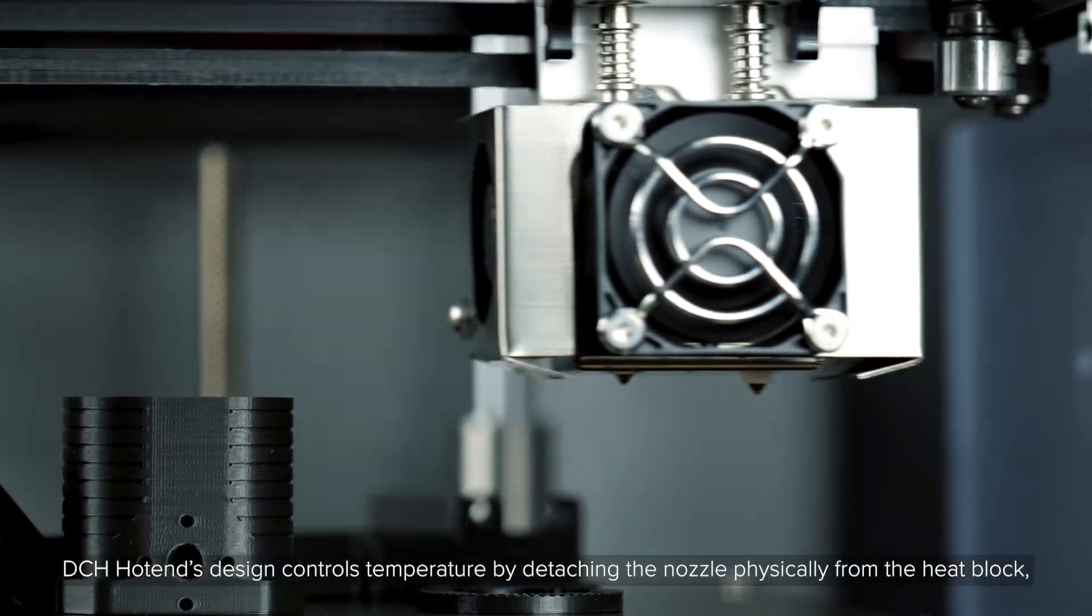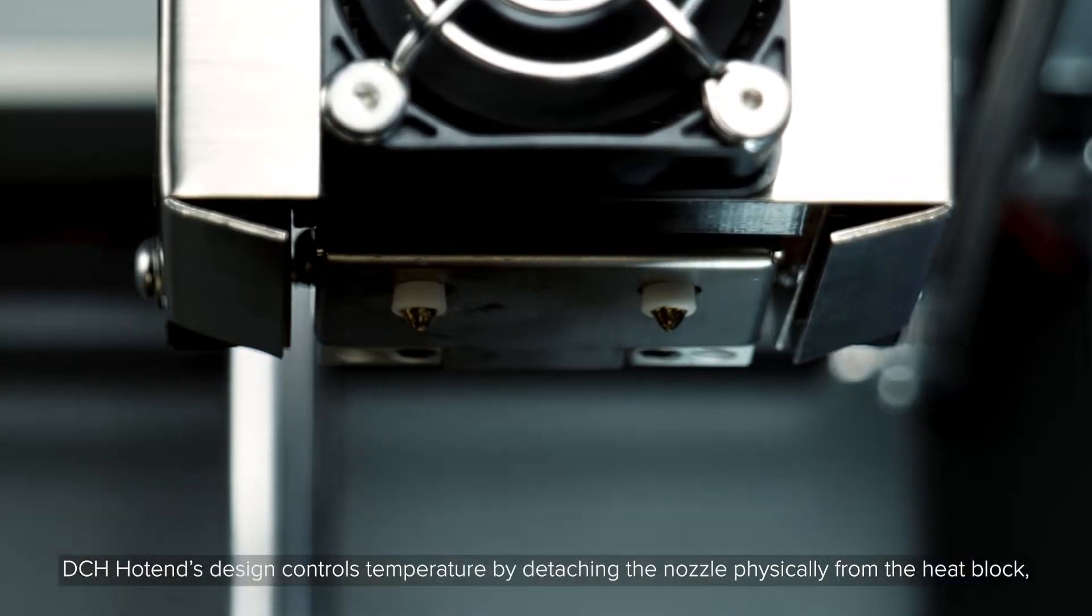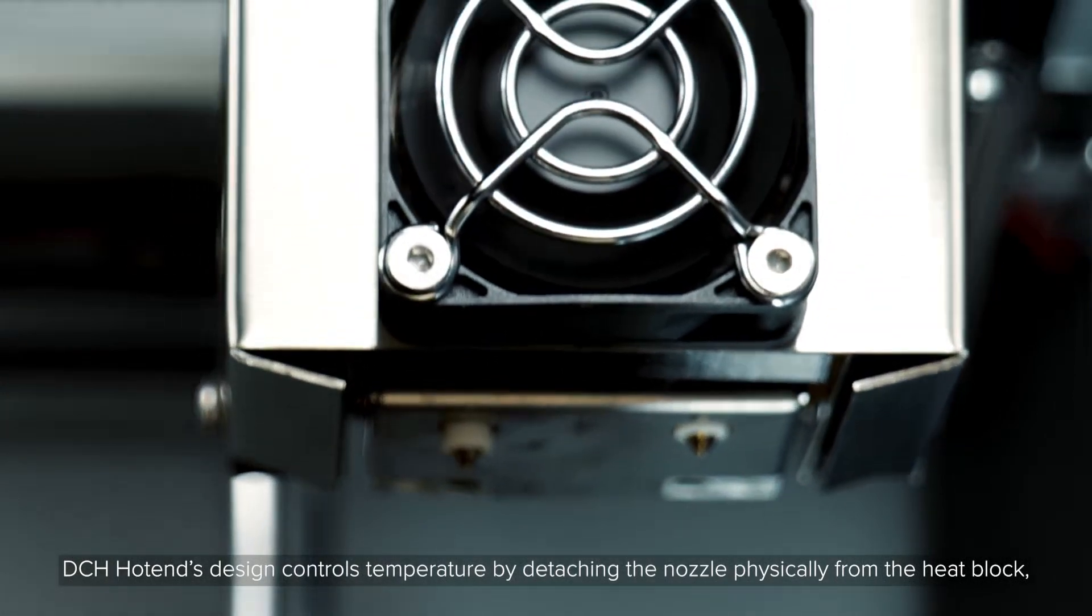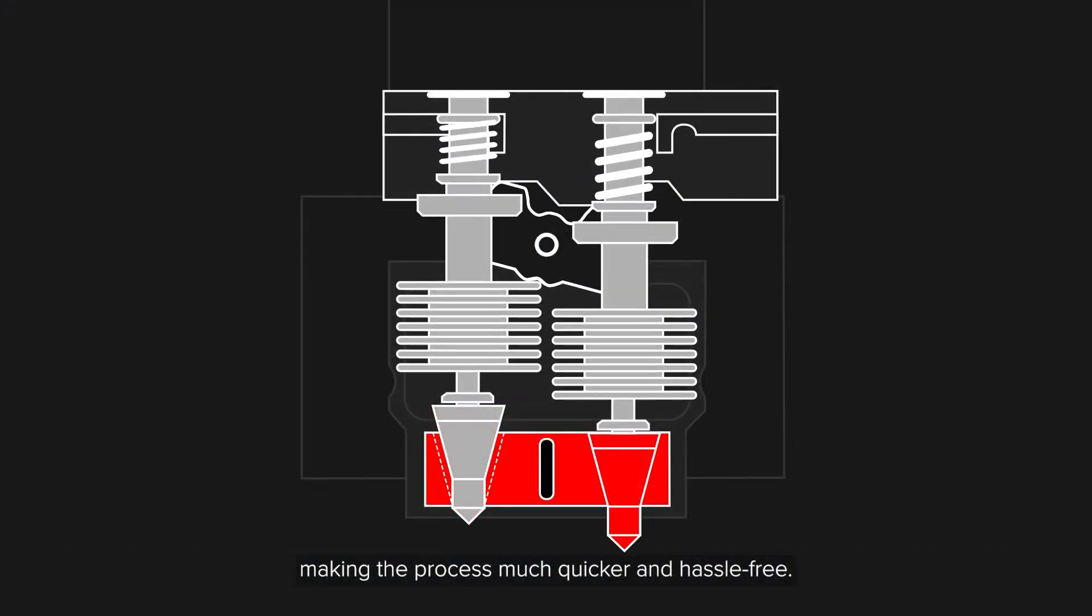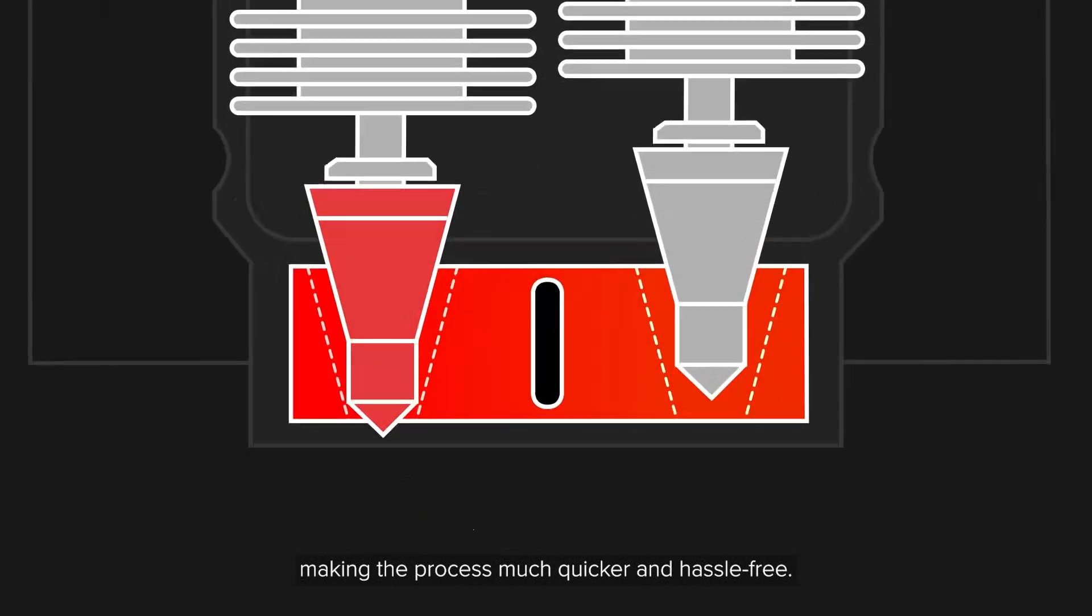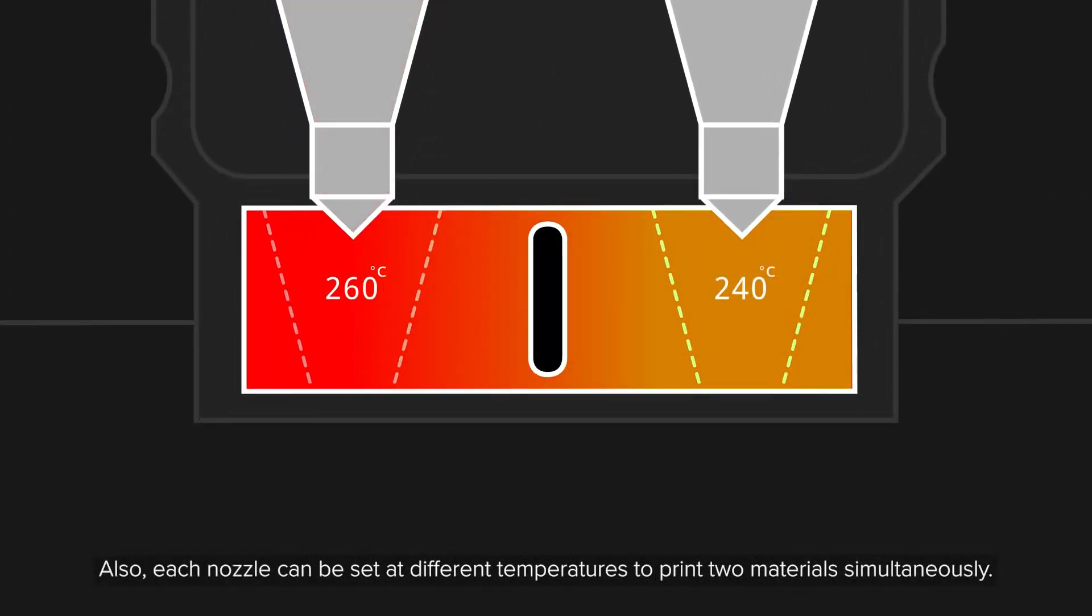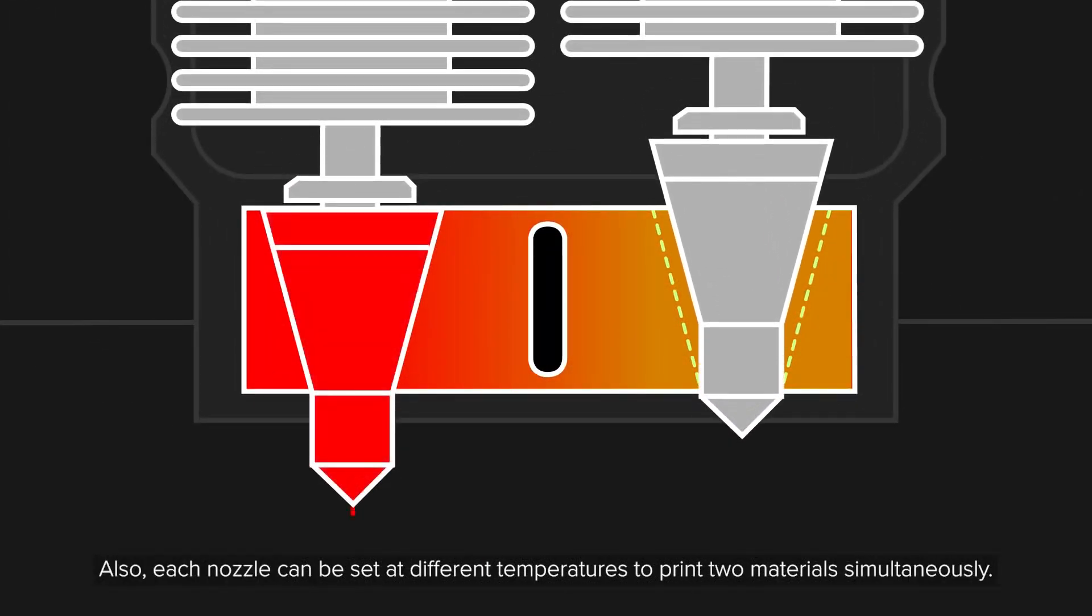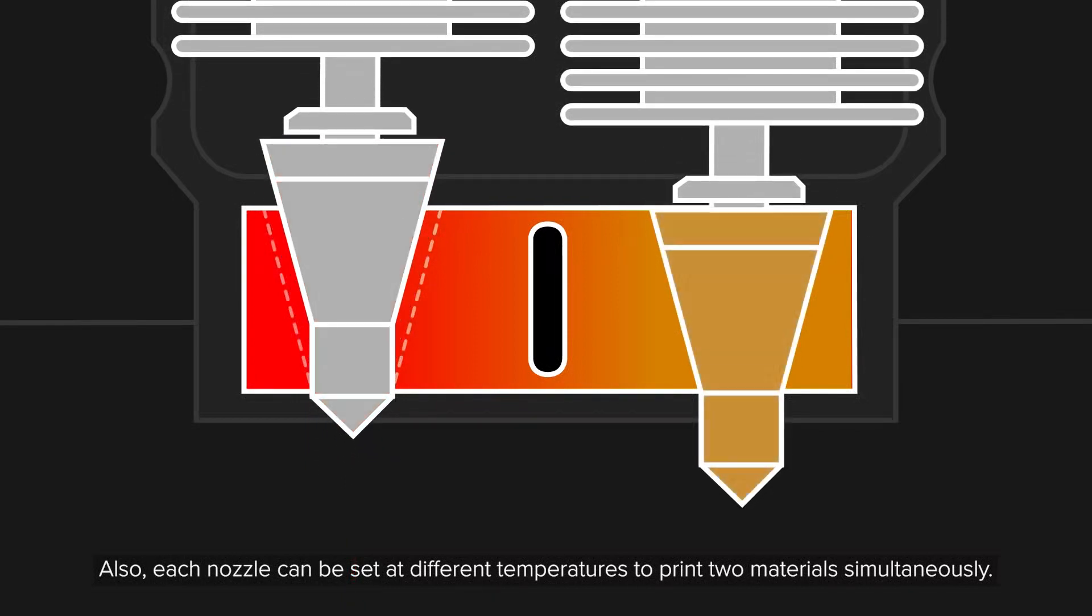DCH hot end's design controls temperature by detaching the nozzle physically from the heat block, making the process much quicker and hassle free. Also, each nozzle can be set at different temperatures to print two materials simultaneously.